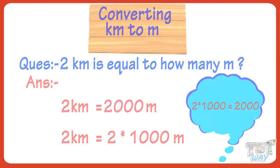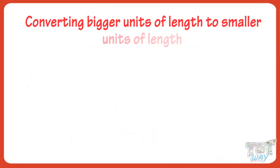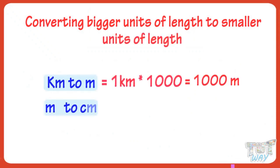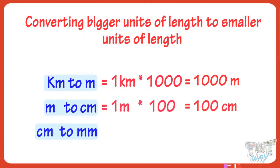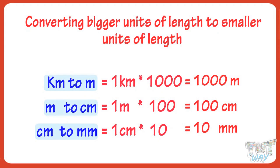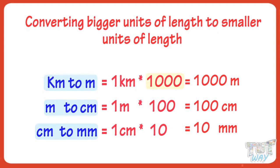Kids, whenever we convert bigger units to smaller units — like kilometers to meters, meters to centimeters, centimeters to millimeters — we multiply. When we convert kilometers to meters, we multiply by 1,000. When we convert meters to centimeters, we multiply by 100. When we convert centimeters to millimeters, we multiply by 10.